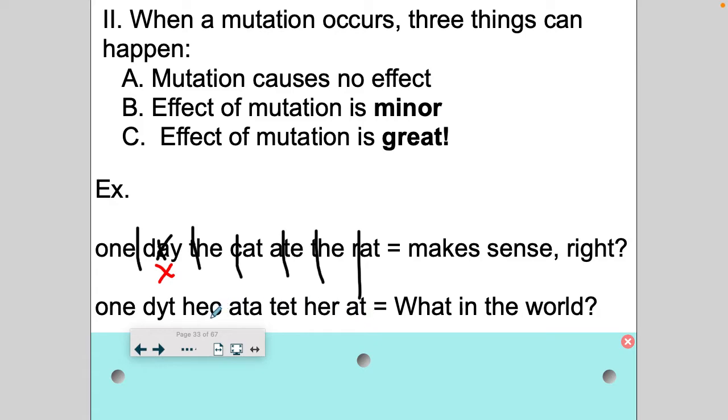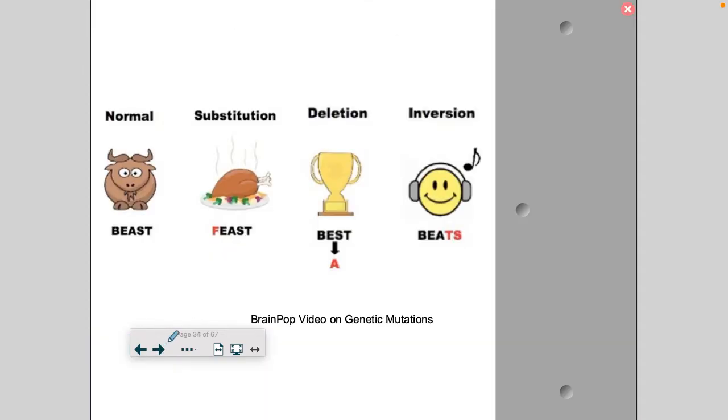So mutations, this is going to be a type of mutation where the effect is great, where the protein is not going to be the protein that it's supposed to be. There are different types of mutations. Let's just say that our protein here is BEAST.